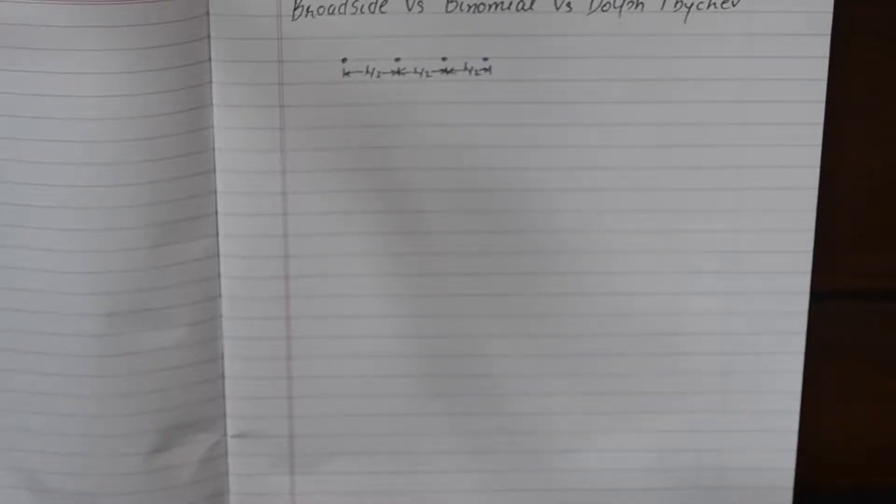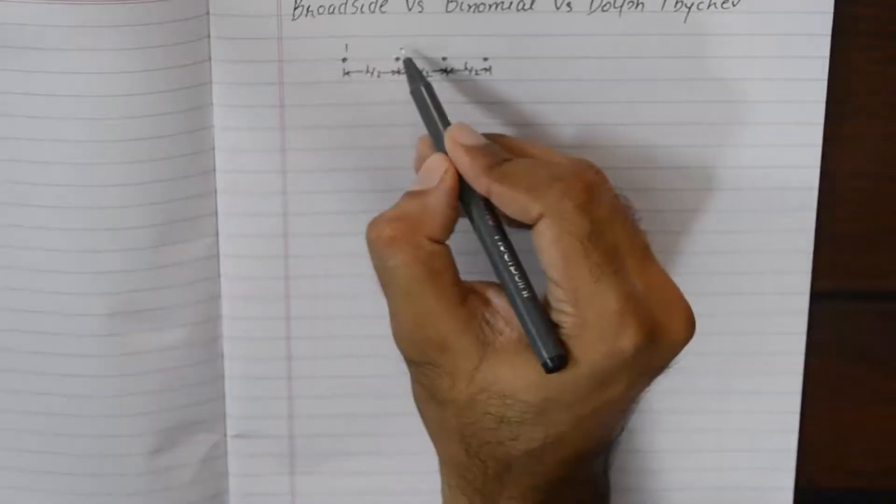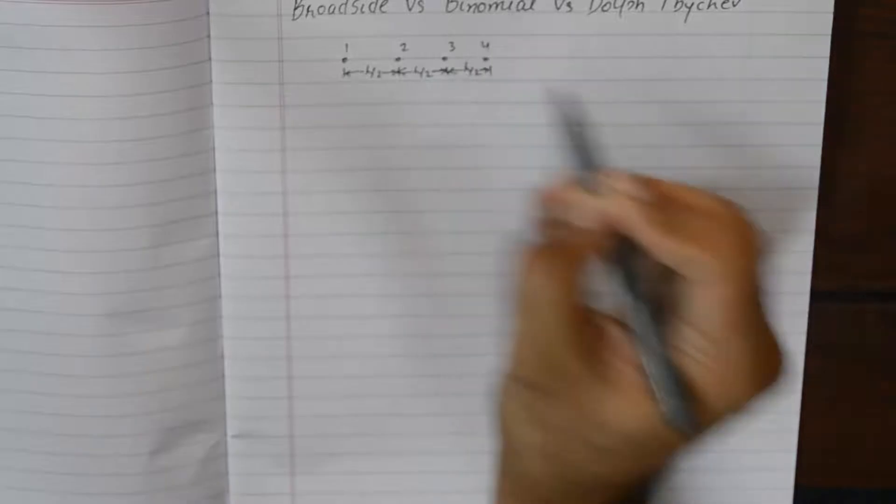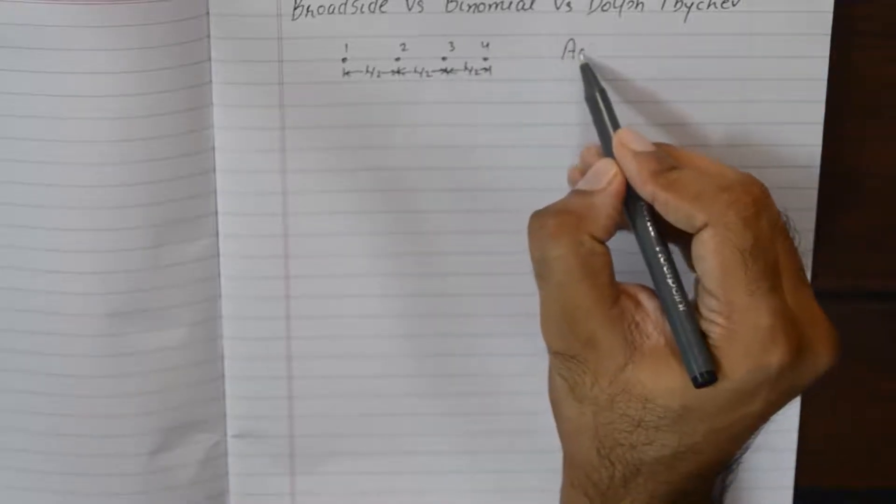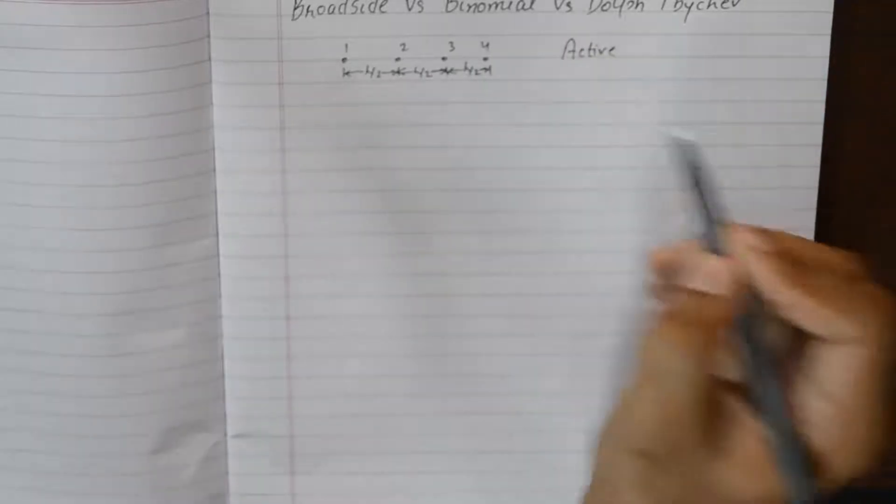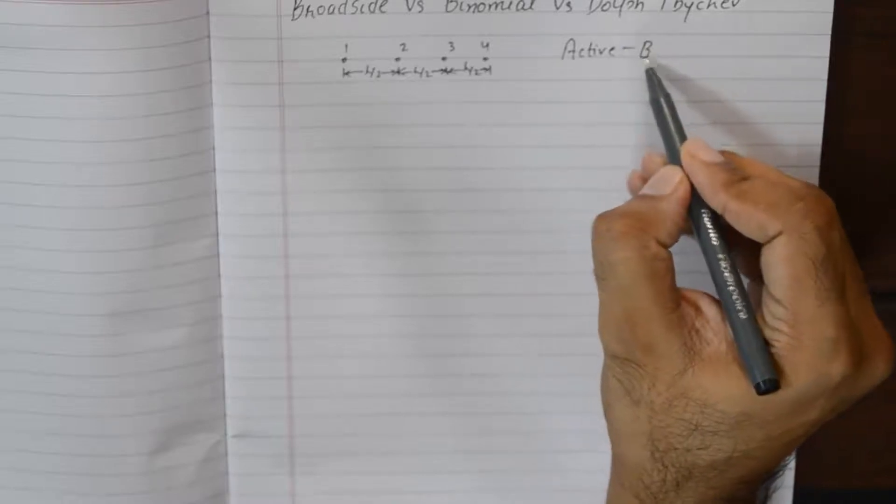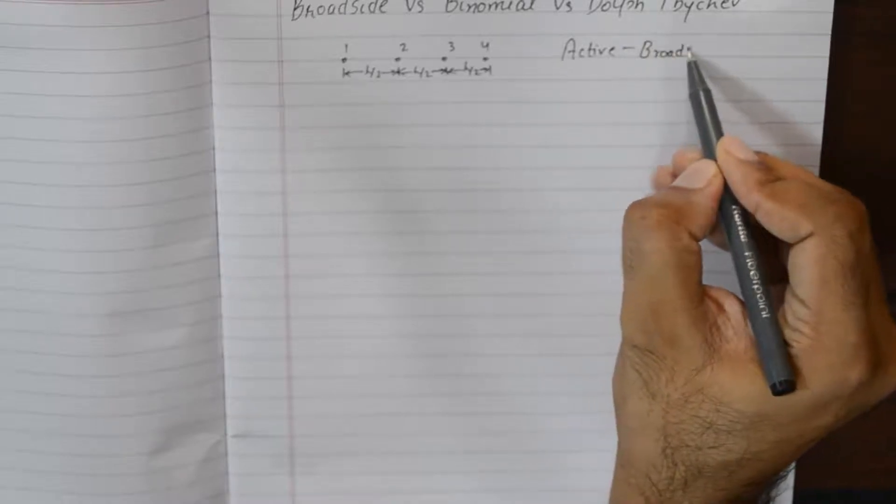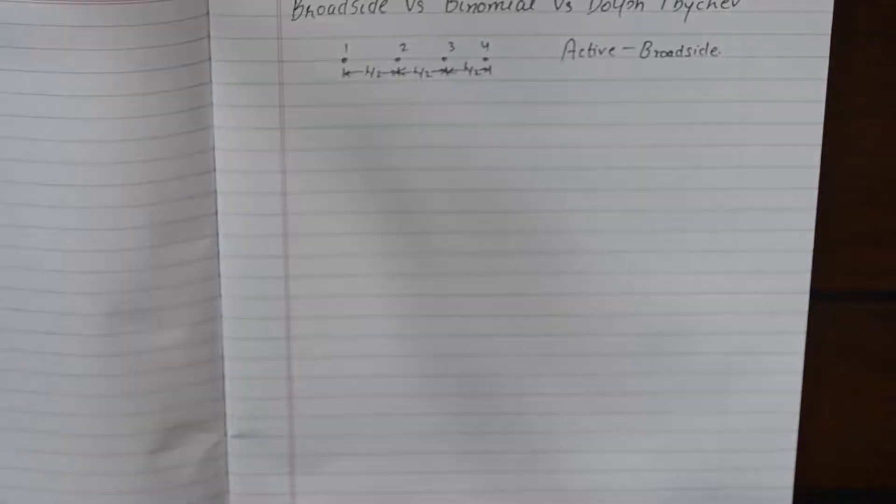Now broadside is an example of the simplest array that we can make by using all active elements. If we have four elements 1, 2, 3, 4, all of them are active in case of broadside array.